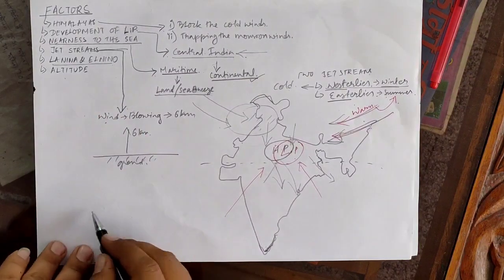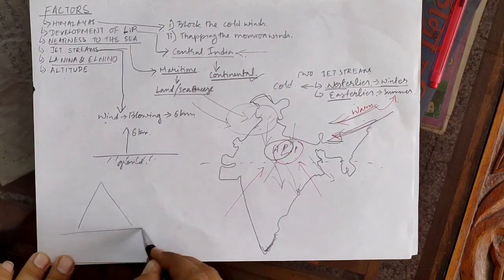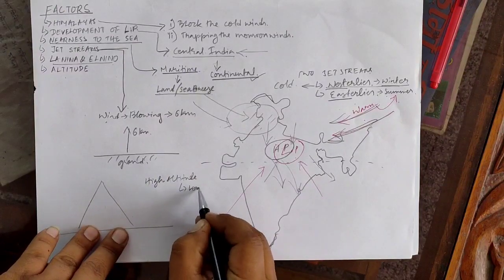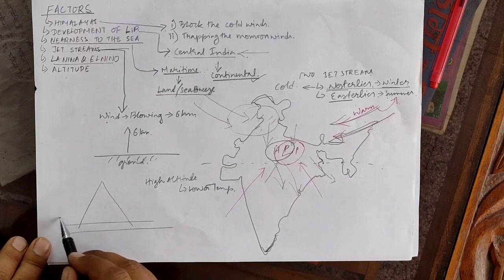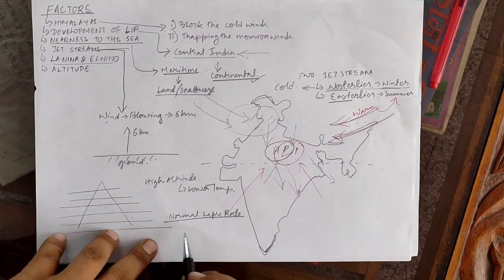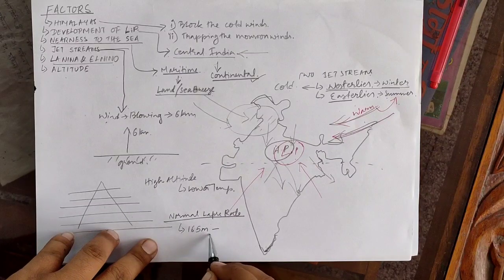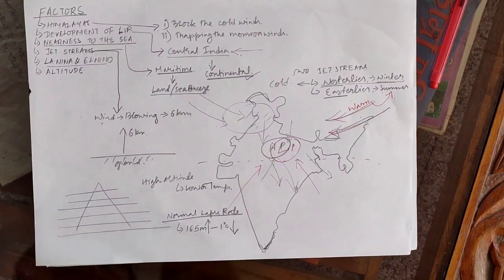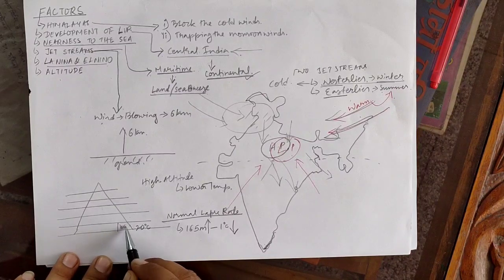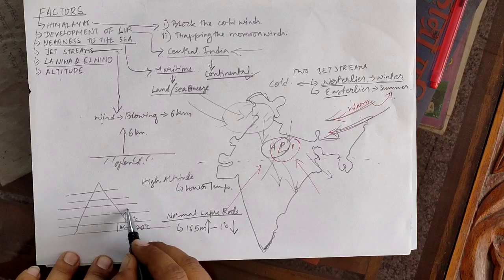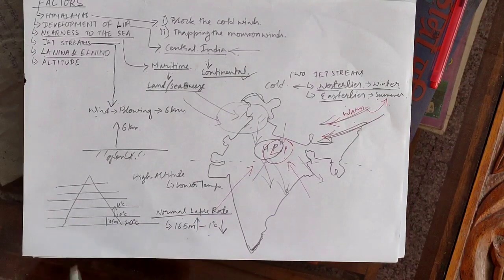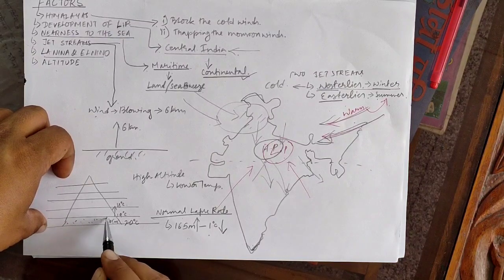Another factor is altitude, which means height. In mountainous areas it is much colder than in neighboring plains because higher altitude results in lower temperature. This is because of the normal lapse rate. The normal lapse rate means that with an increase in height of 165 meters, the temperature decreases by one degree Celsius. So at ground level if it is 20°C, at 165 meters it becomes 19°C, at another 165 meters it becomes 18°C, and so on.